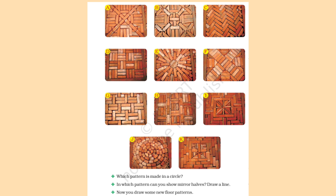Now we can see a list of patterns made with brick — patterns A through K, so there are 11 patterns in total. The question is: which pattern is made in a circle? Looking at the patterns, J has a circle pattern.